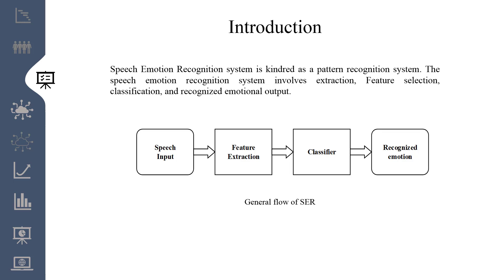In this paper, deep neural networks is used as the classification model. As you can see on the screen, a block diagram of the general flow of speech emotion recognition is shown. First, the speech input; features are extracted from the speech input and are fed to the classifier for classification; and at last, the recognized emotions are output.